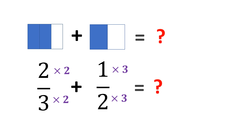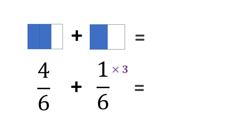Let's multiply. 3 times 2 is 6, and 2 times 2 is 4. 1 times 3 is 3. Now we have the same denominators — 4 sixths and 3 sixths. For the figures: since we multiplied 2 thirds by 2, we divide the figure by 2 for every part — now it's 4 sixths. For 1 half, since we multiplied by 3, we divide the figure by 3 for each part, making it 3 sixths. Now the two figures fit with each other, so we can combine them.